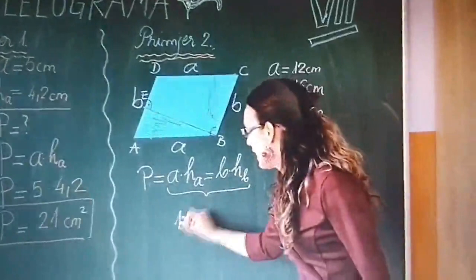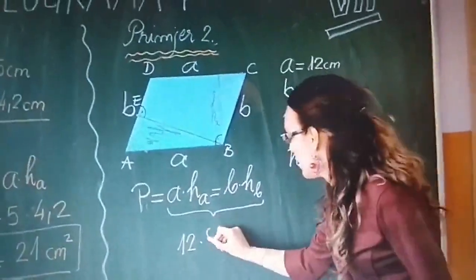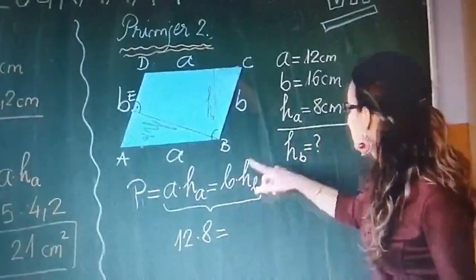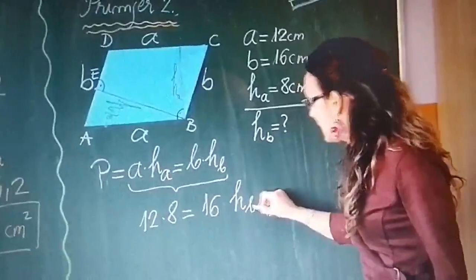I odmah uvrstiti podatke sa kojima raspolažemo. Pa imam stranica A, 12, puta visina ha, 8. Jednako stranica B, 16, puta visina hb.